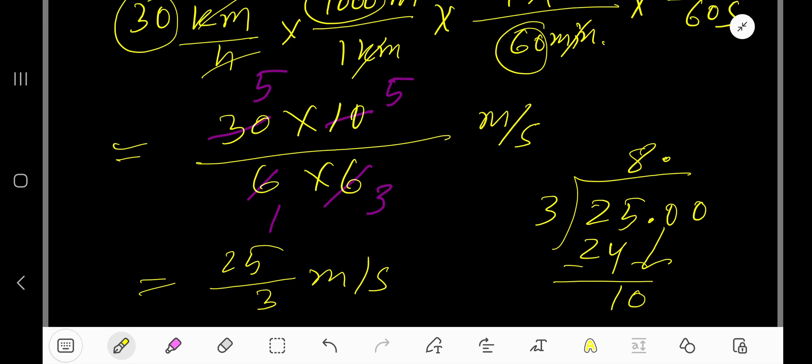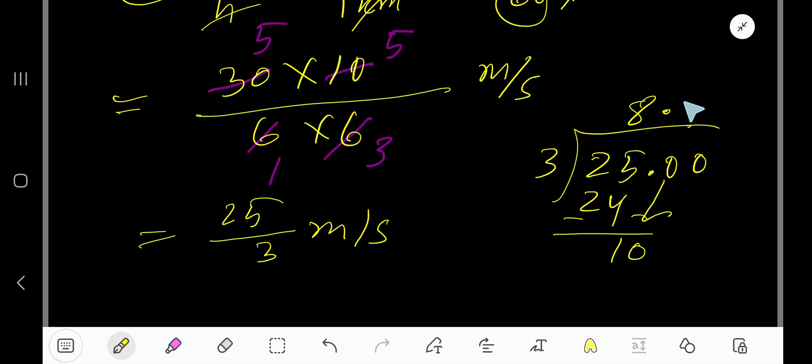Subtract to get 1. Bring down the next zero. 3 goes into 10, 3 times. The 3 is repeating.